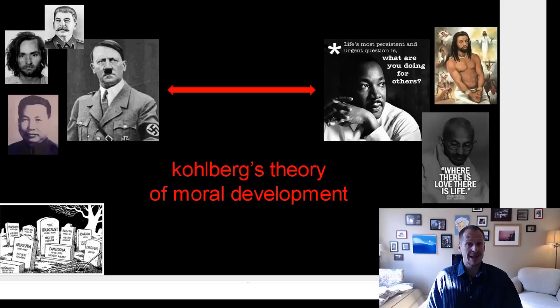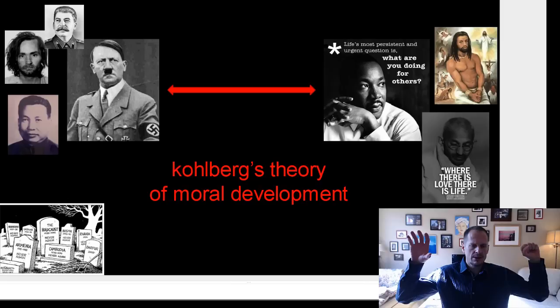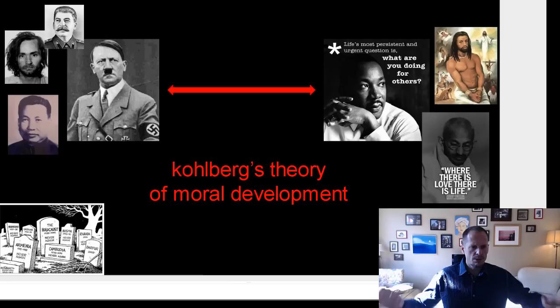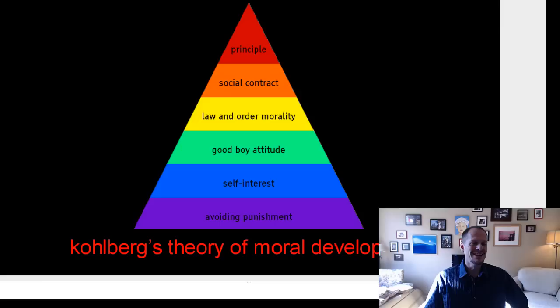The main thing I want you to take from this video is that there's this theory called Kohlberg's Theory of Moral Development, which is the official academic way of describing what I described in the last video — that when we think about morals or ethics, we can think about it as a continuum, a spectrum. Being able to drop Kohlberg's Theory of Moral Development into a conversation is something that makes you sound a little bit more intelligent.